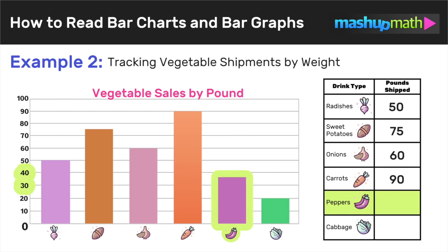For peppers, the bar goes to the midpoint between 30 and 40, so we conclude that 35 pounds of peppers were shipped. For our last vegetable, cabbage — the shortest bar on the graph — it goes up to 20, so we conclude that 20 pounds of cabbage were shipped.